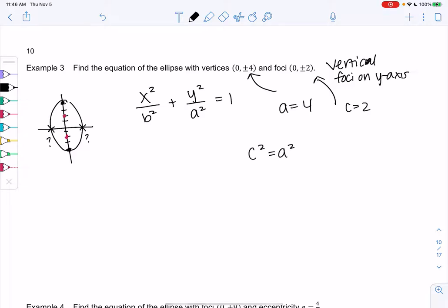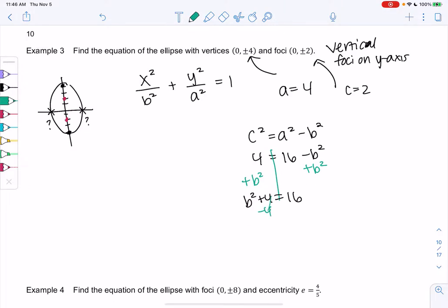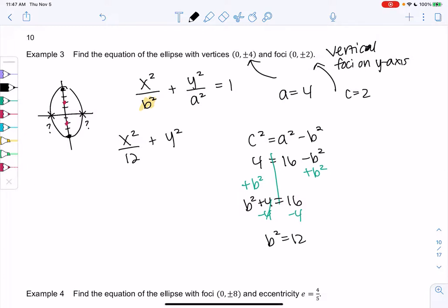c² equals a² minus b². So we get 4 equals 16 minus b². I'm going to move the b² because I don't like the negative b². So b² plus 4 is 16. I'll subtract 4, so b² is 12. And then I actually don't care what b is since the formula has b². So x² over 12 plus y² over 16 because a is 4, so a² is 16 equals 1. And that's the equation of the ellipse.